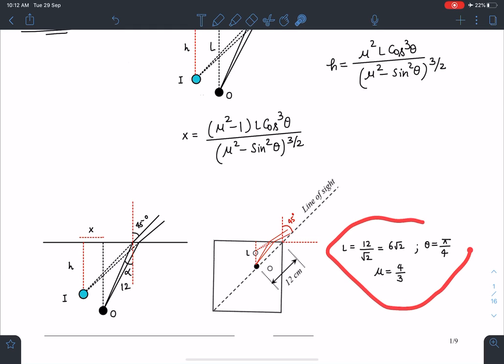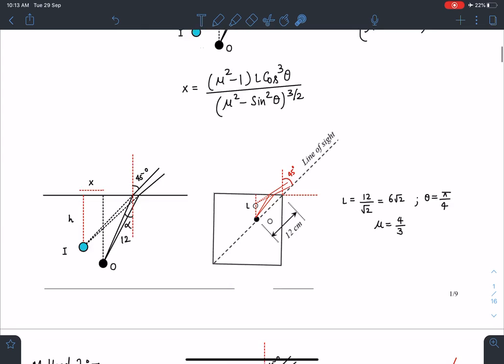So we need to substitute these values in this formula in order to get this vertical height and this horizontal shift of the image. So it's very unlikely that they would have followed this method.